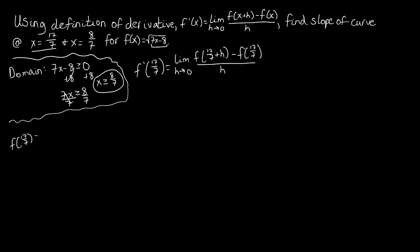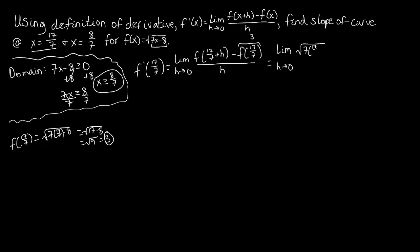Down here is a little scratch work. f of 17 over 7 is going to look like the square root of 7 times 17 over 7 minus 8. The 7s cancel out, so we're left with the square root of 17 minus 8, or the square root of 9, which gives us 3. So f of 17 over 7 is 3. Now we substitute 17 over 7 plus h in for x and also substitute 3 for f of 17 over 7, giving us the square root of 7 times (17 over 7 plus h) minus 8, then minus 3, all over h.